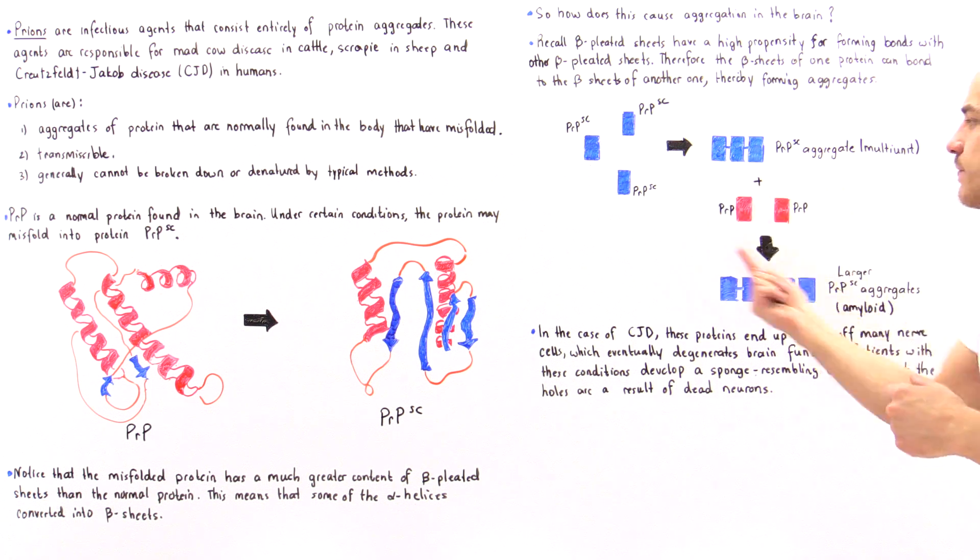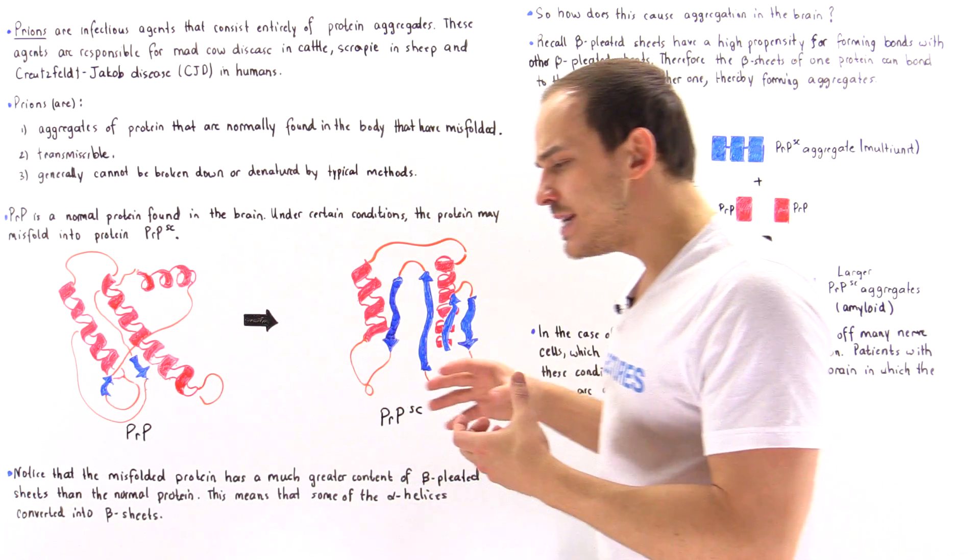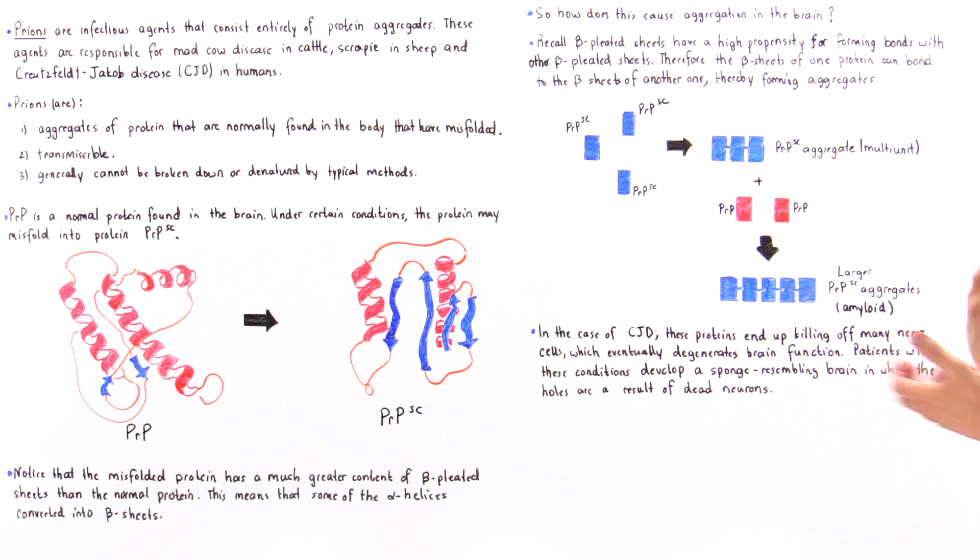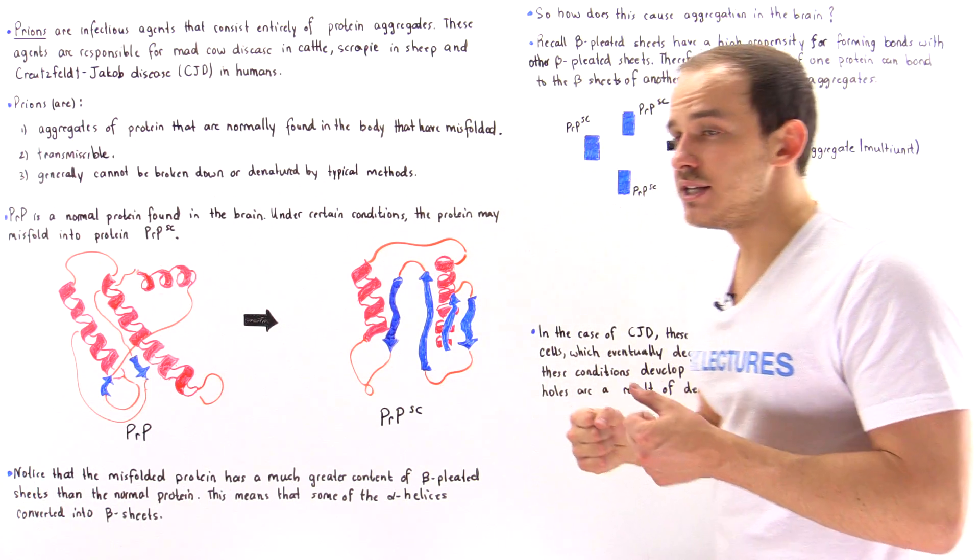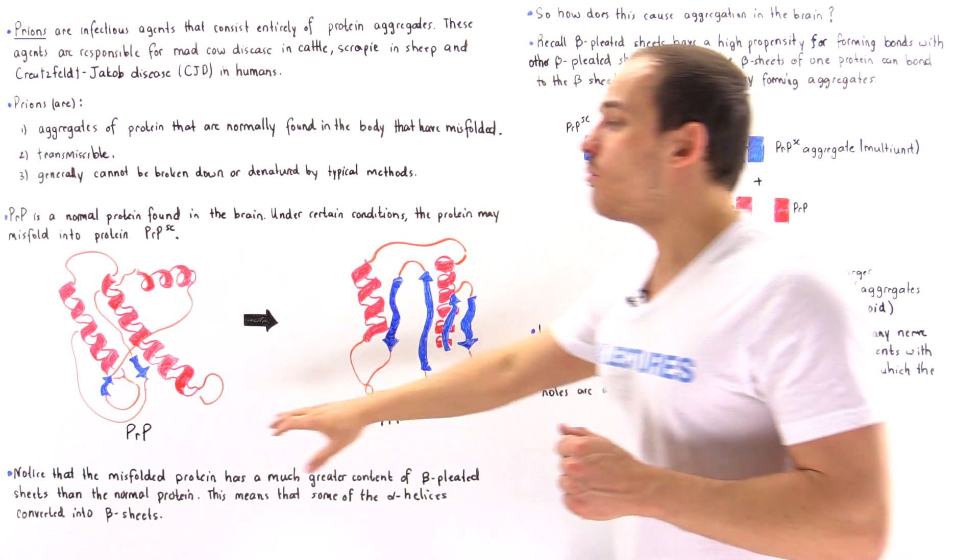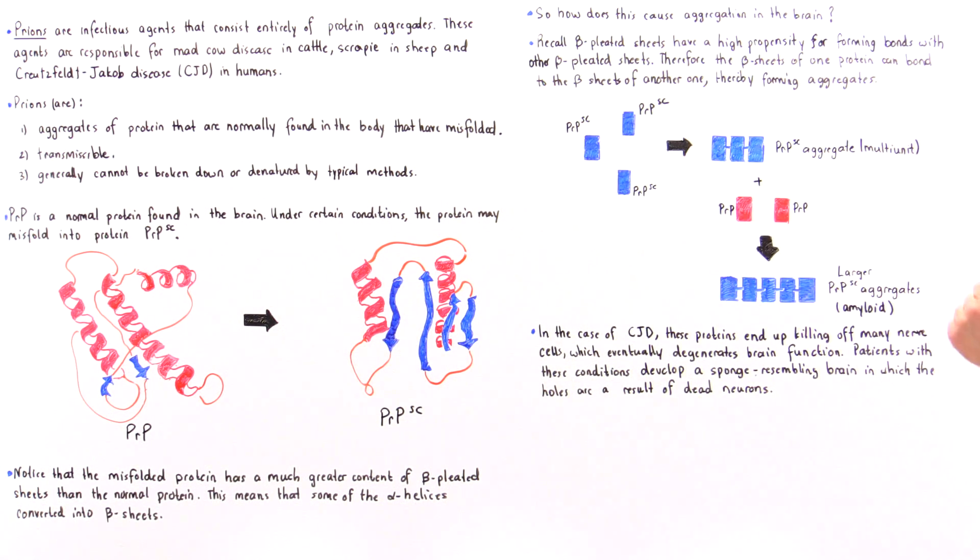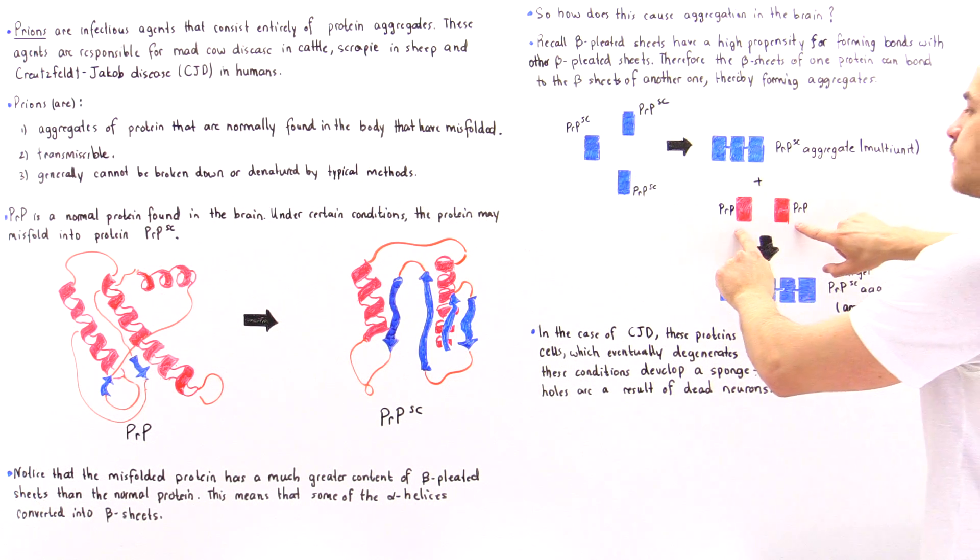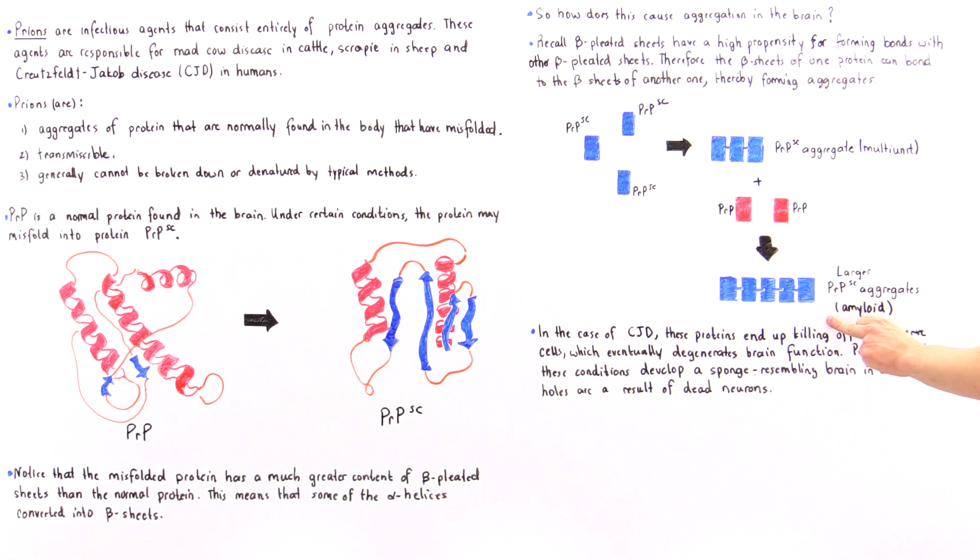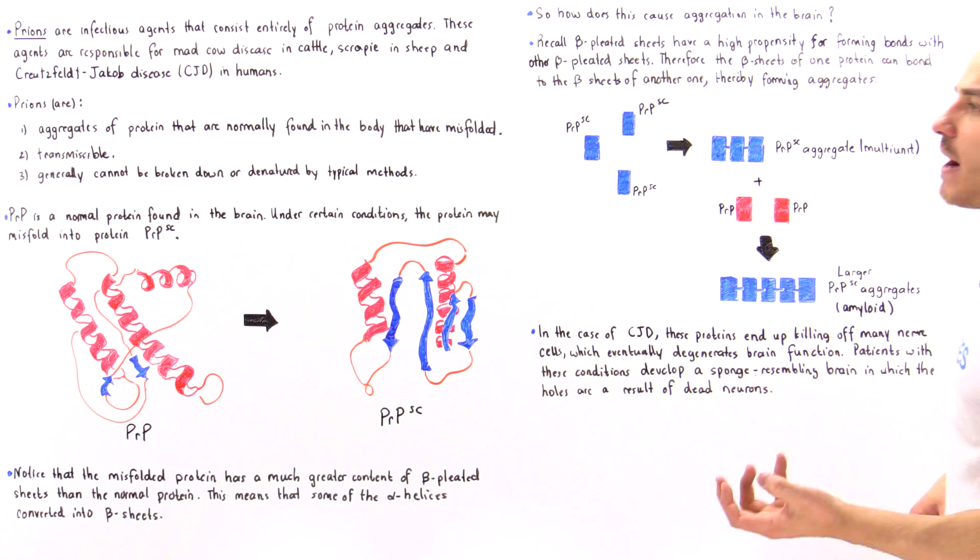Now let's suppose we have these red molecules in close proximity that are normal. By a mechanism that we are still unsure of, these infected, misfolded proteins can somehow transform these normal proteins into abnormal proteins. These will bind to our multi-unit aggregate, transforming into the blue ones. Eventually we form this fiber-like protein we call an amyloid fiber. These are known as amyloid fibers.